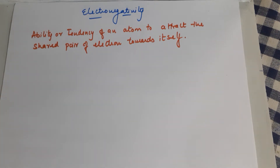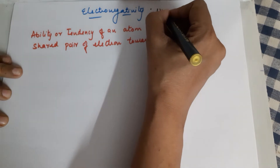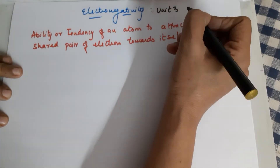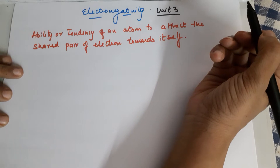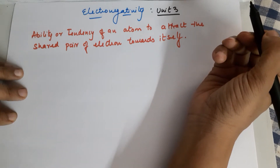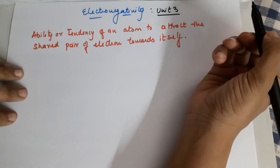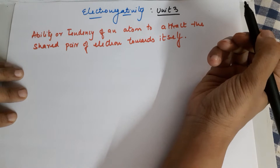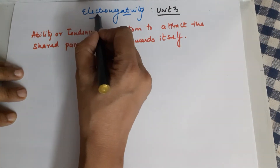Welcome to my channel by Seema Makhijani. Good morning students of class 11th. Today we are doing a topic known as electronegativity. This topic is a part of unit 3, class 11th — periodic classification of elements. There are other topics already given in the channel playlist for unit 3 periodic classification; you can have a look at those topics as well.